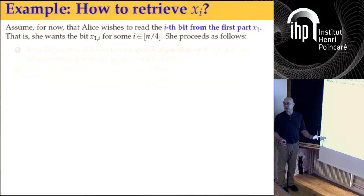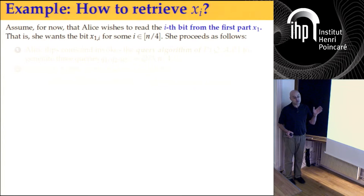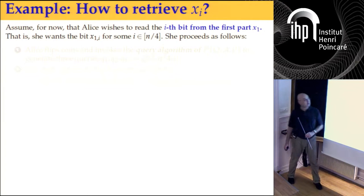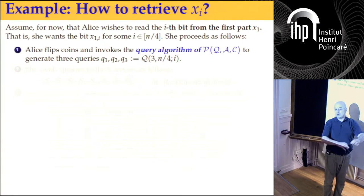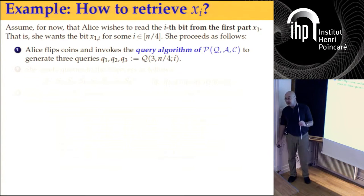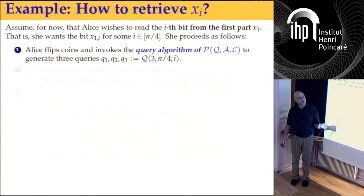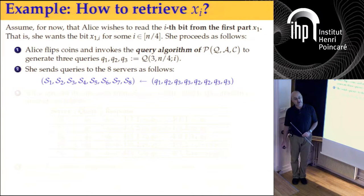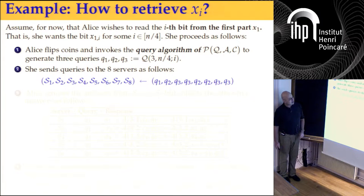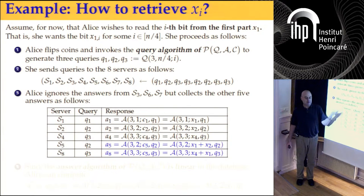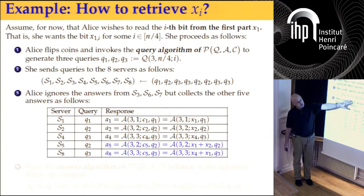Suppose I want to retrieve privately a bit from the first part of the database, X1. I'll take my existing query algorithm, generate three queries, and send them to servers — some queries are replicated. I'll get back answers, ignore three of them, and use five of them. The privacy is clear: I inherited the privacy from the original algorithm.